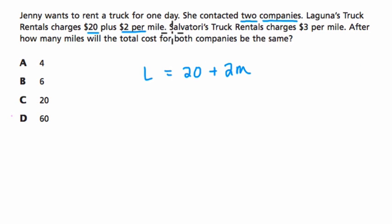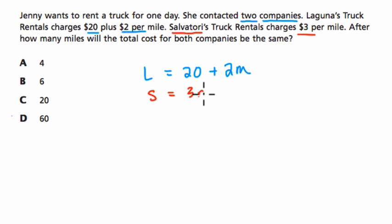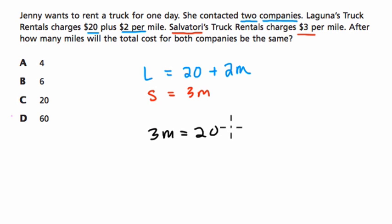The next company, Salvatore's truck rentals, charges $3 per mile — there's no initial cost, it's just $3 per mile. After how many miles will the total cost for both companies be the same? In other words, when will these two equations be equal — when will 3m equal 20 plus 2m?